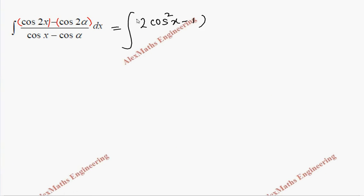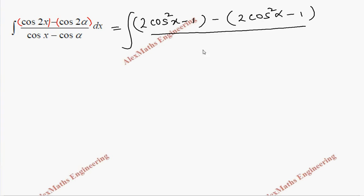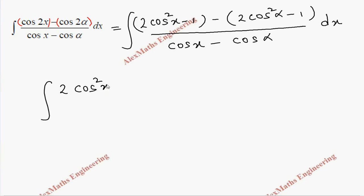We replace in the numerator for both terms: cos 2x becomes 2cos²x − 1, and cos 2α becomes 2cos²α − 1. In the denominator, cos x − cos α remains as it is.